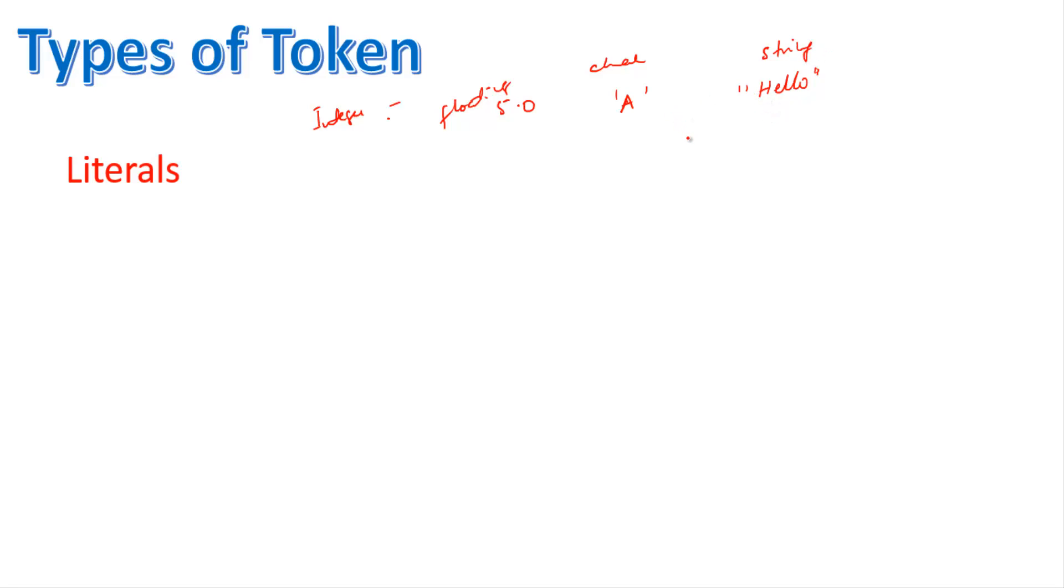Now if here we write either true or false, this is called the boolean literal. And there is one another literal called the null literal. So literally here, what are these? These are all constant values. All constant values. So here, like say 5 or 10, this is the integer literal, constant value.